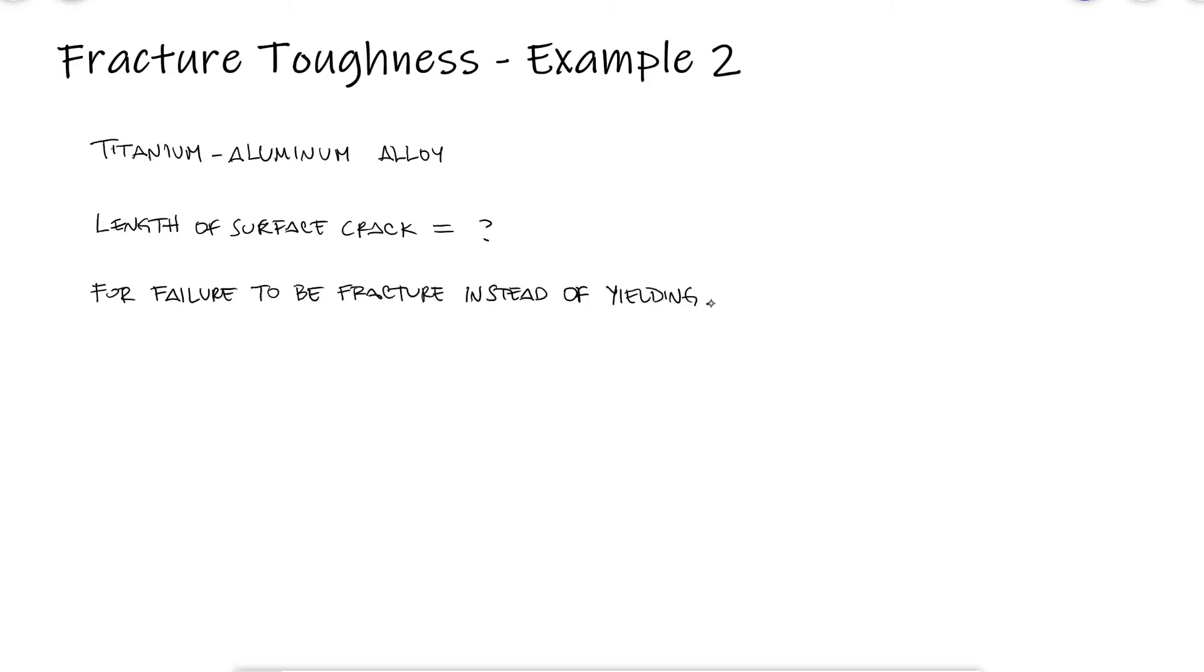Assume that the modification factor beta or capital Y has already been found to be 1.35 from experimental testing. This is the second example for the fracture toughness main video, link below. The link to example 1 is also in the video description.